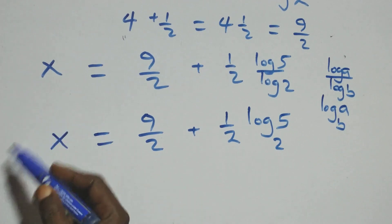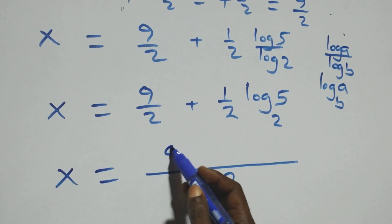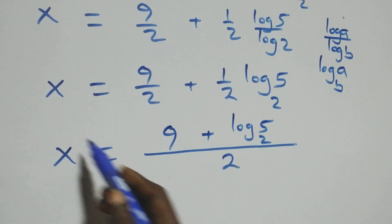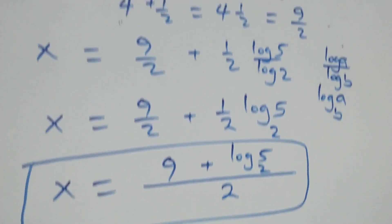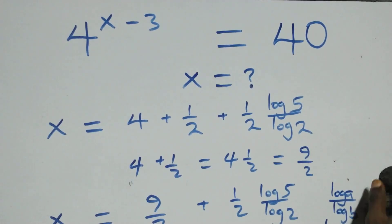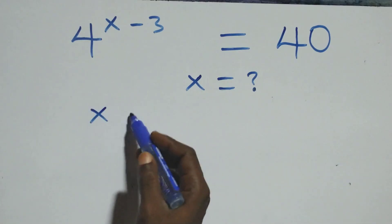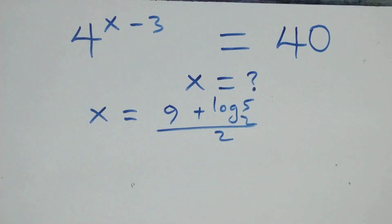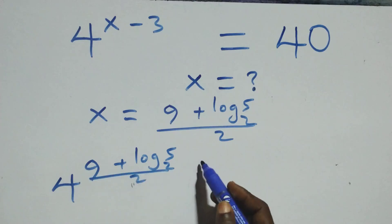The value of x — we can bring this together as one expression. We have x equals nine plus log 5 base 2, all over 2. Let's check here if this satisfies the given problem, that is, we substitute the value of x. Which is x equals nine plus log 5 base 2 over 2. This gives us 4 raised to power nine plus log 5 base 2 over 2, minus 3, equals 40.